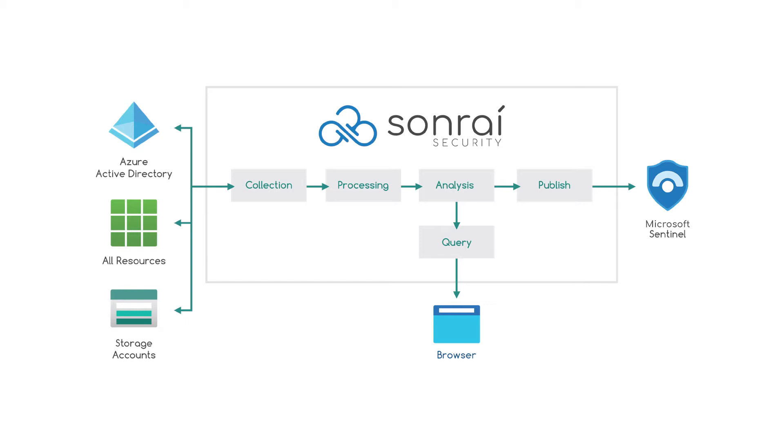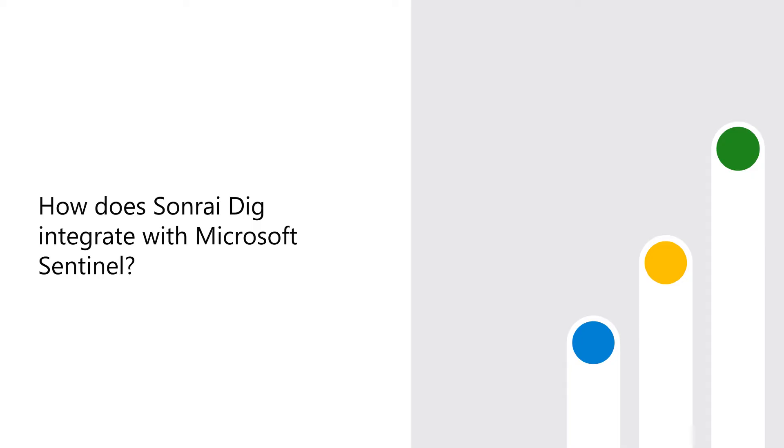At that point, you can use automation and orchestration tools from Sentinel to fix those risks, or you can use Sunree's remediation tools inside Sunree and then push the results of the remediation into Sentinel. You use Sunree with Sentinel because you want a full picture of your cloud inventory and understand how someone or something could access sensitive data when they shouldn't be able to.